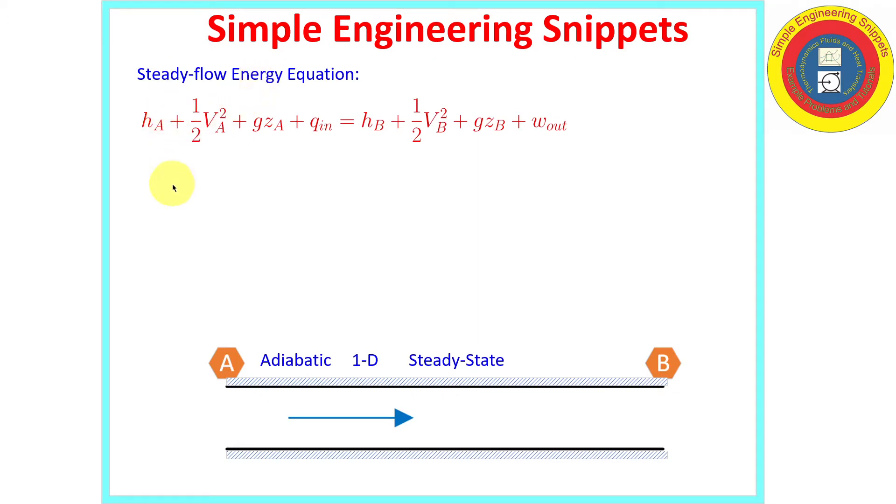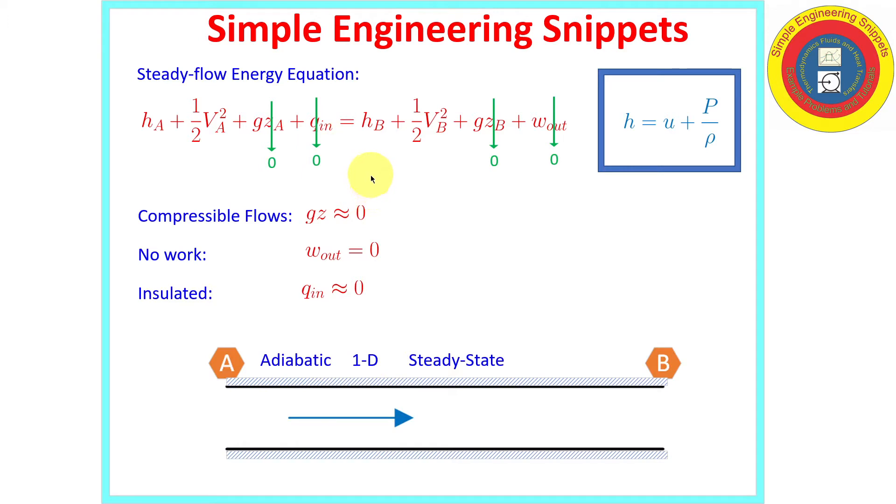Okay, let's start with the steady flow energy equation. The energy equation tells us that the conditions at A, the enthalpy plus the kinetic energy term plus the potential energy term plus any heat addition between A and B is equal to the energy at B which is the enthalpy, kinetic energy, potential energy, and plus any work out of the system. Just a reminder the enthalpy is equal to the internal energy plus the flow work term which is pressure over the density. For compressible flows, usually vapor or gases, the potential energy term is pretty negligible and so we'll be making those terms zero. In this system there is no compressor or turbine and so the work out term is also zero. And again it's insulated and so we will have no heat in or heat out.